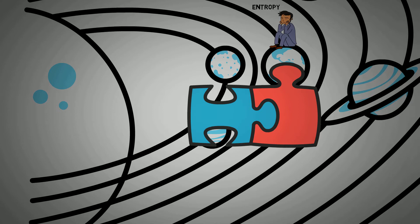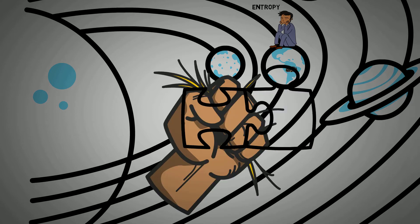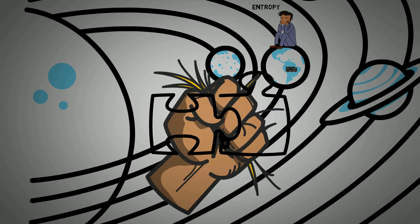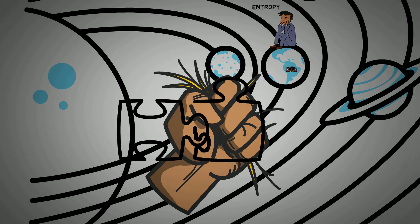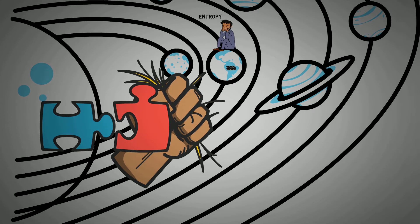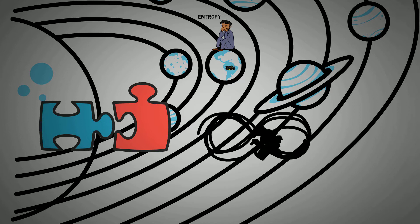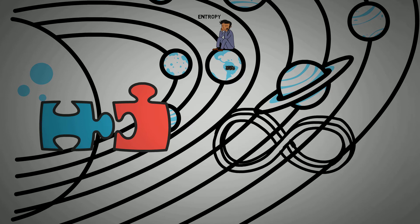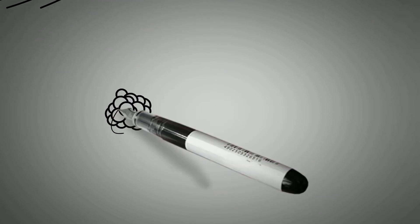Every piece would have to fall in just the right spot to create a completed puzzle. There is only one possible state where every piece is in order, but there are a nearly infinite number of states where the pieces are in disorder. Mathematically speaking, an orderly outcome is incredibly unlikely to happen at random.